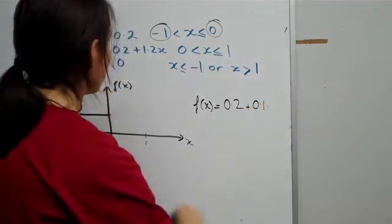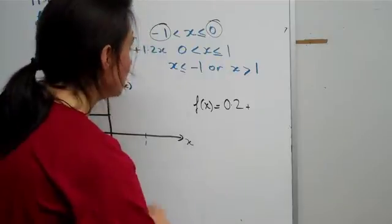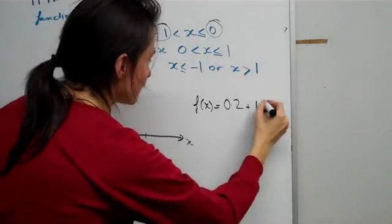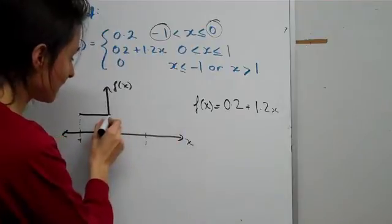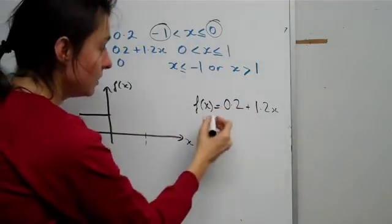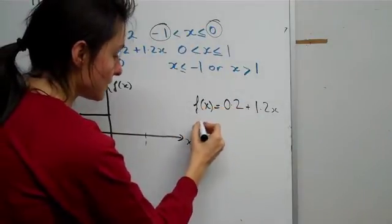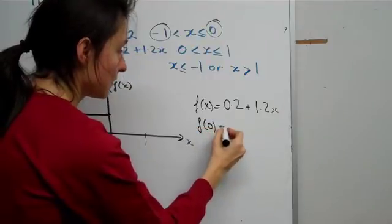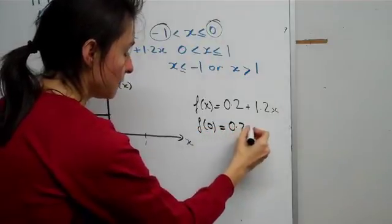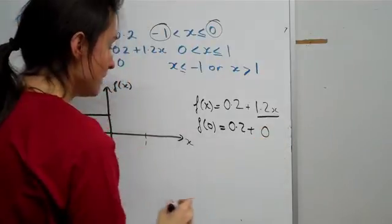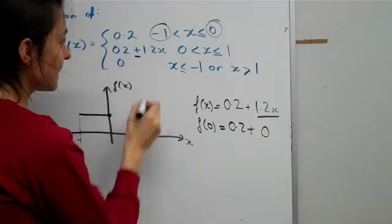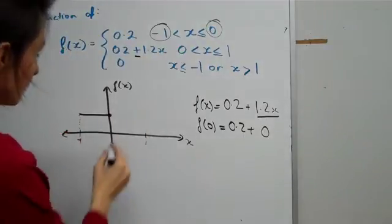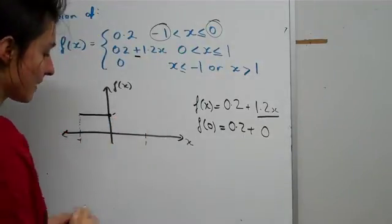0.2 + 1.2x, and we need to figure out the y-intercept first. So let's just substitute x to be 0. 0.2 plus that's just going to become 0. So you're starting from 0.2 and then because this is a positive gradient, then you must be moving upwards from that point.